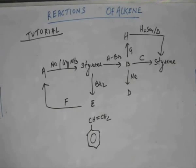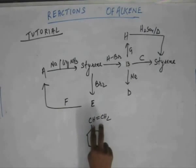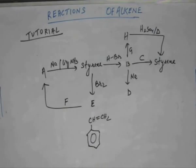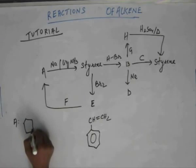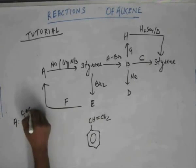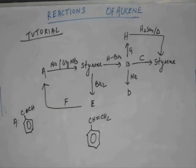So A, you understand that A must be an alkyne. And there's no other possibility because that alkyne cannot be in the ring. So the triple bond has to be between these two carbons. So there is no pain at all in finding A. So A is simple, easy. This is your A. Now from A, you got styrene. Fair enough.